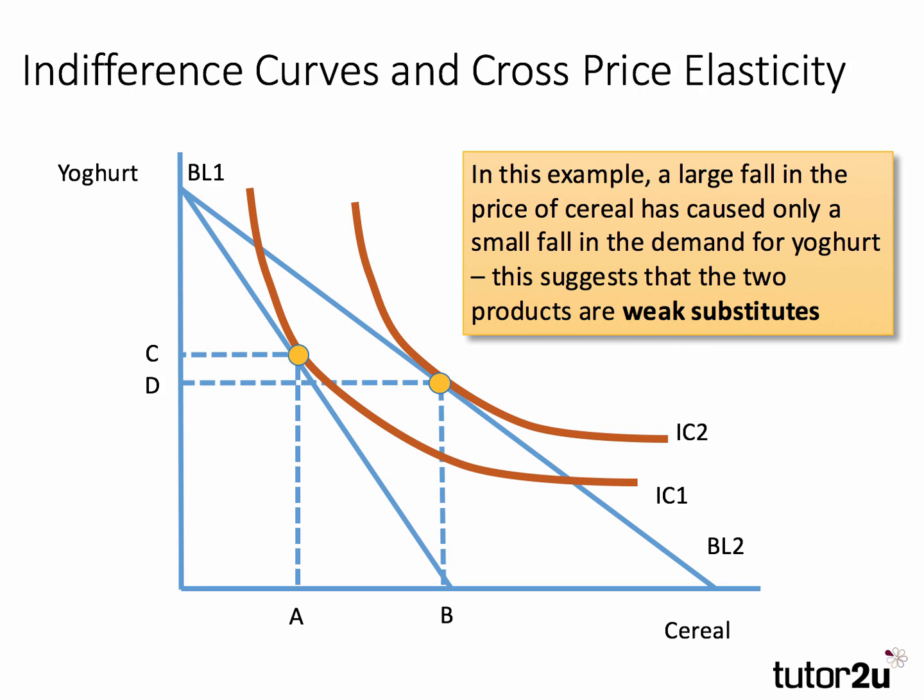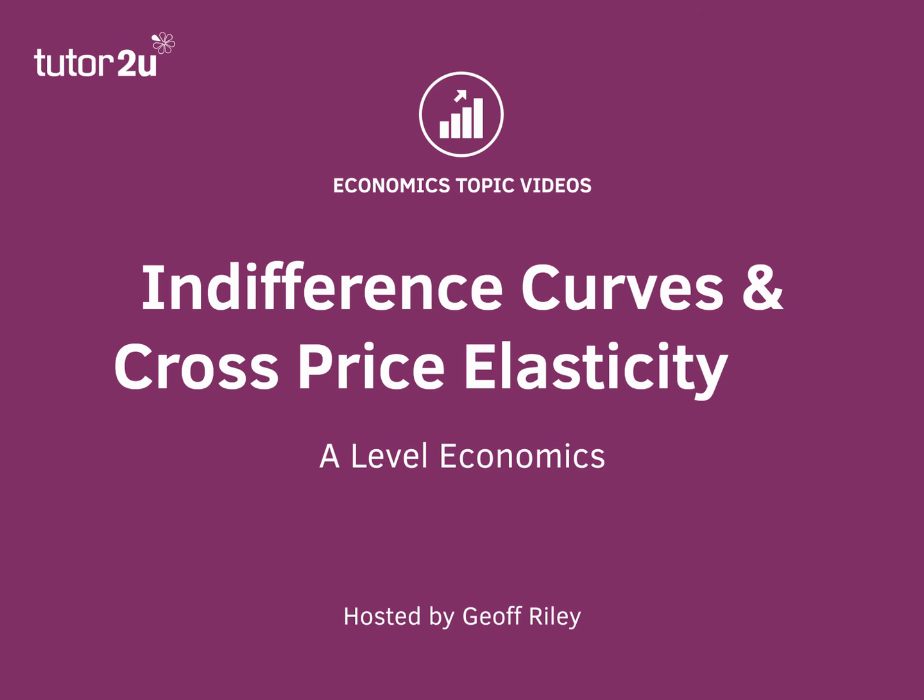People have quite strong default bias when it comes to their choice of breakfast foods. If the price of cereal falls a lot, it's unlikely that yogurt lovers are going to seriously give up their breakfast habits just because cereals are cheaper. Hopefully that shows you how you can use indifference curves to show cross price elasticity of demand for two substitute products. Thank you.